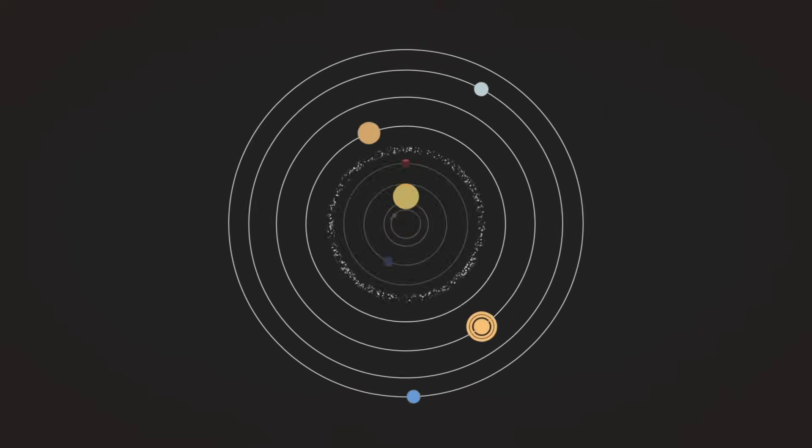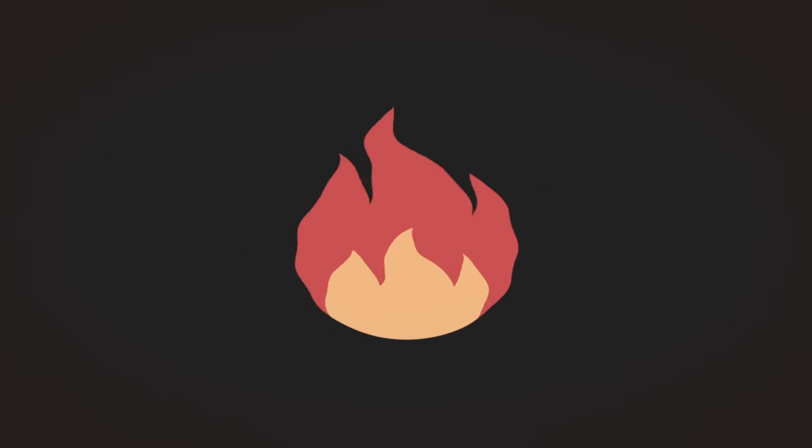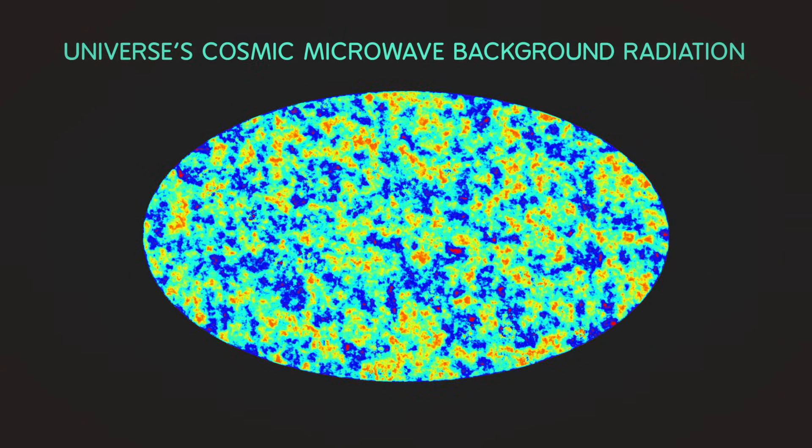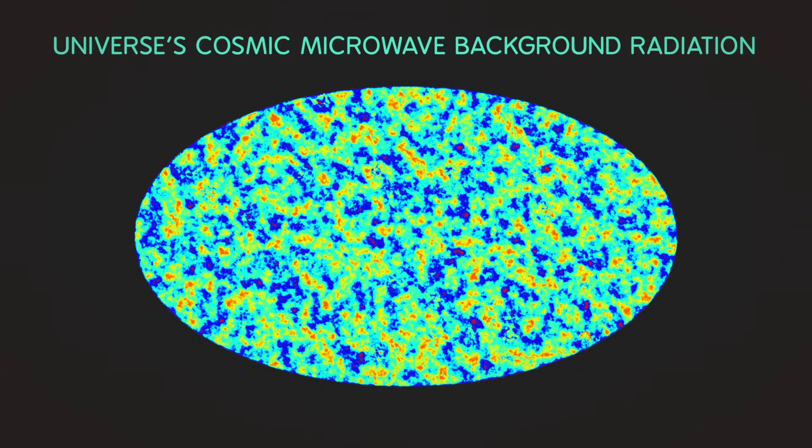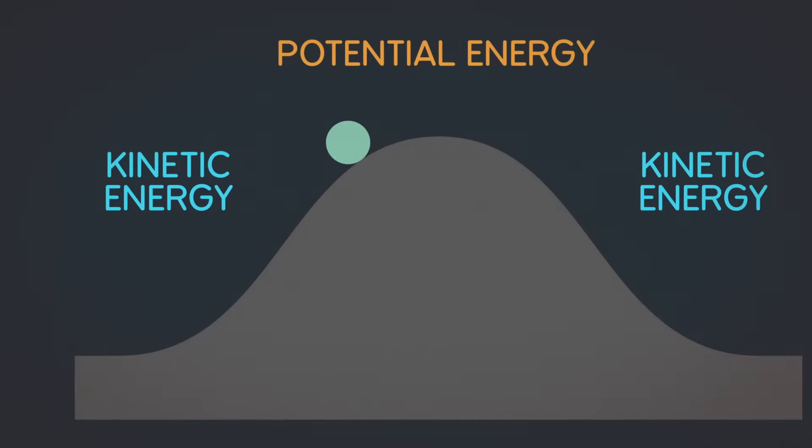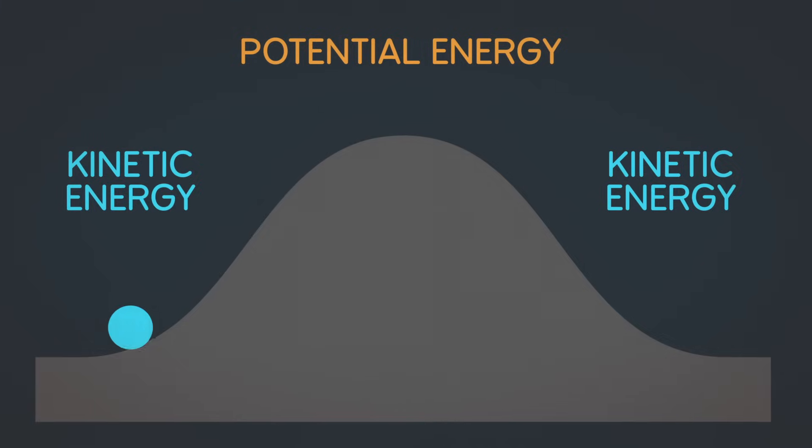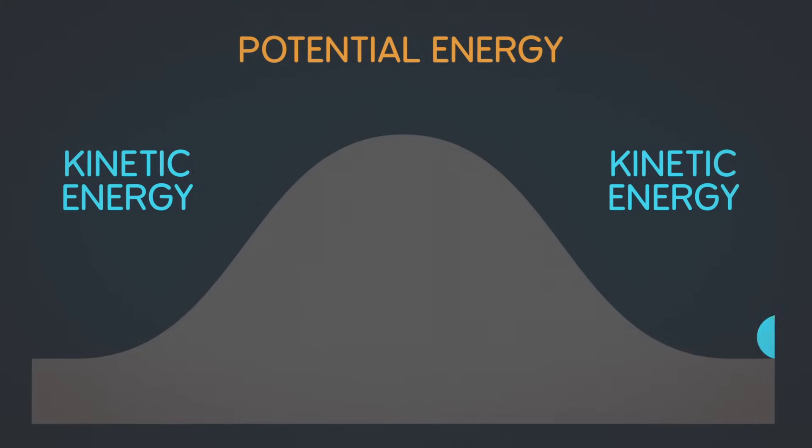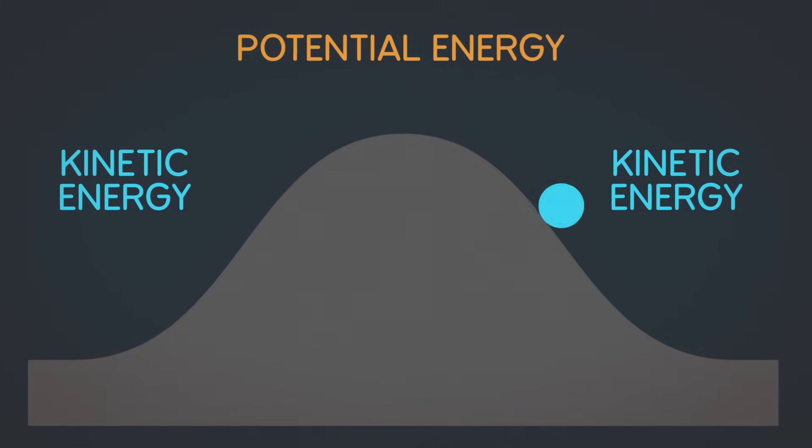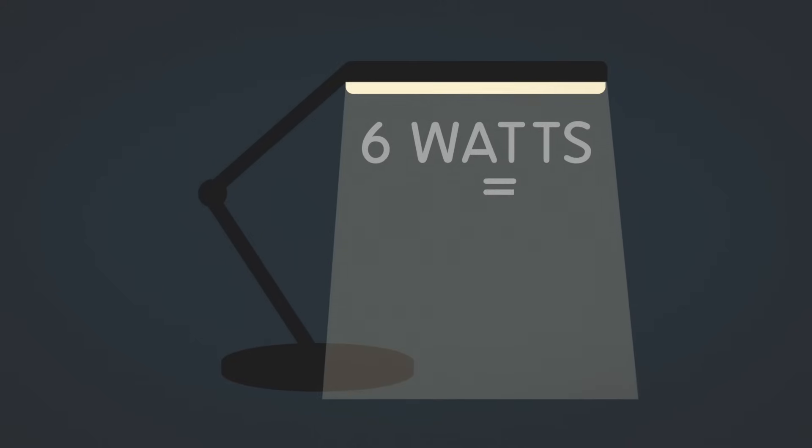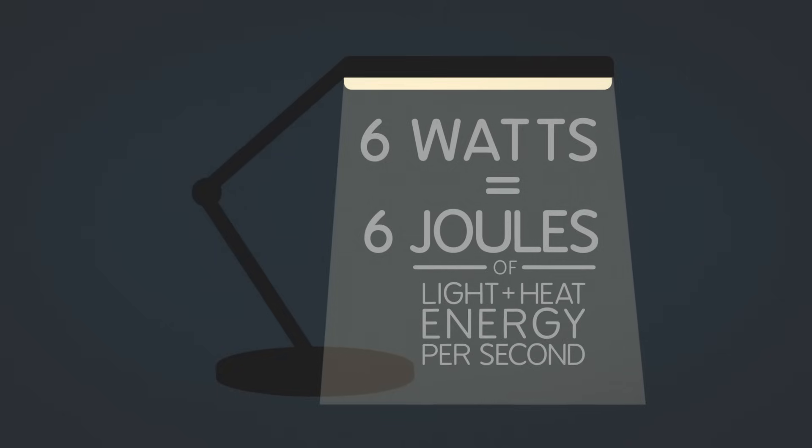Energy is all around us, a physical quantity that follows precise natural laws. Our universe has a finite amount of it. It's neither created nor destroyed, but can take different forms, such as kinetic or potential energy, with different properties and formulas to remember. For instance, an LED desk lamp's 6-watt bulb transfers 6 joules of light energy per second.